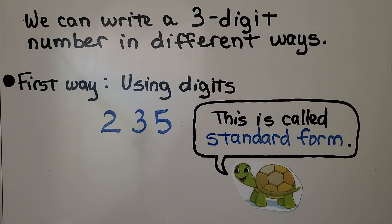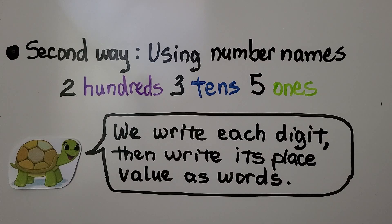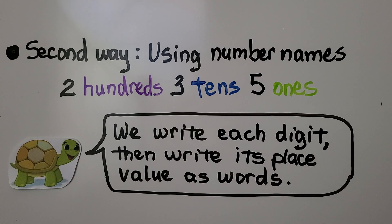A second way to write a number is using number names: two hundreds, three tens, five ones. We write each digit, then write its place value as words.